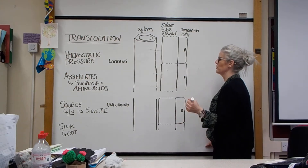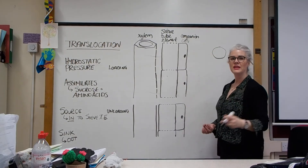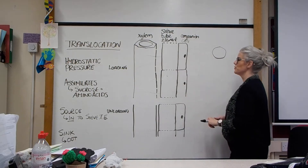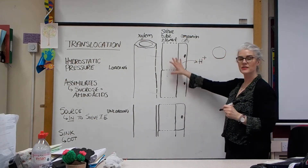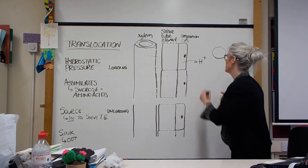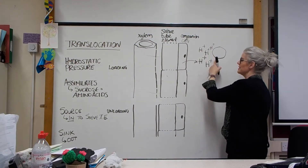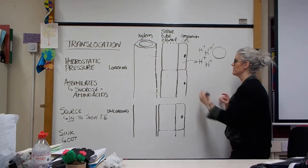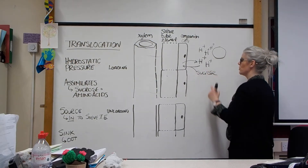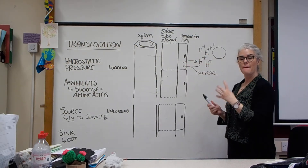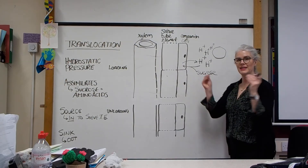Let's look at loading — how we get sucrose into the sieve tube element. Imagine a cell that has been synthesizing assimilates and wants to move them in. The first thing that happens is companion cells actively transport hydrogen ions out, so a hydrogen ion concentration builds up outside. These hydrogen ions then want to move back into the companion cells, and when they do, they bring sucrose with them.